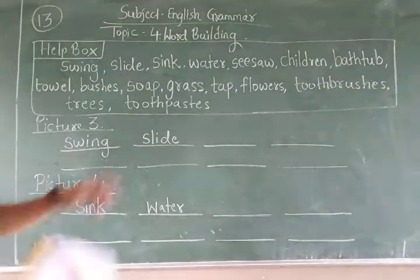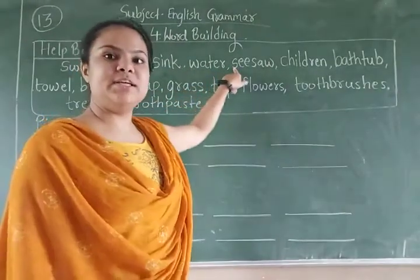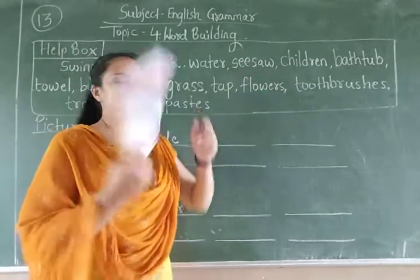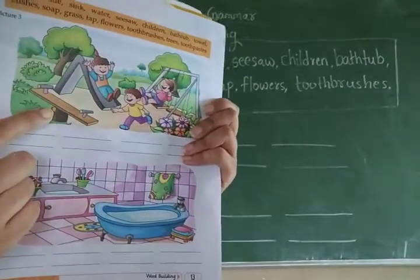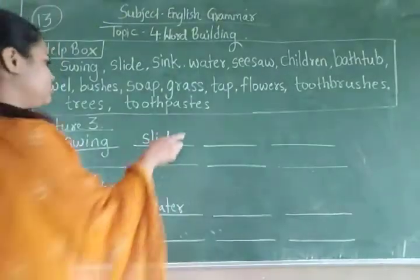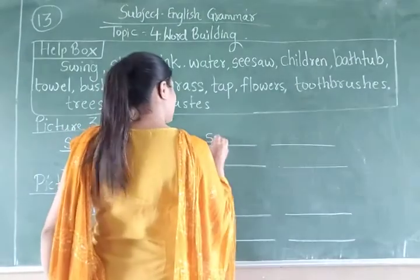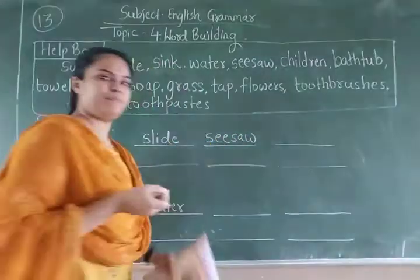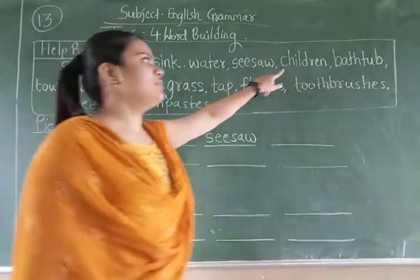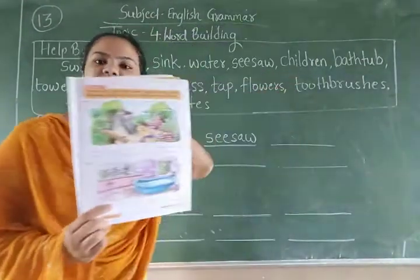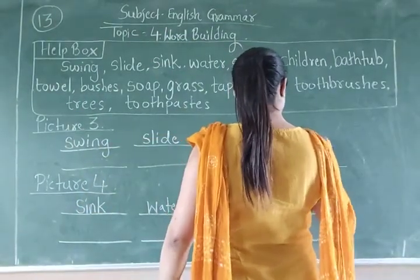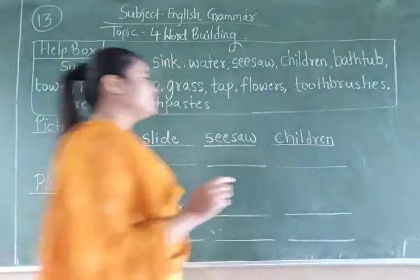After that: S-E-E-S-A-W — seesaw. Seesaw belongs to picture number 3. Write here S-E-E-S-A-W, seesaw. After that: children. Where are the children? In picture number 3. Write down C-H-I-L-D-R-E-N, children.